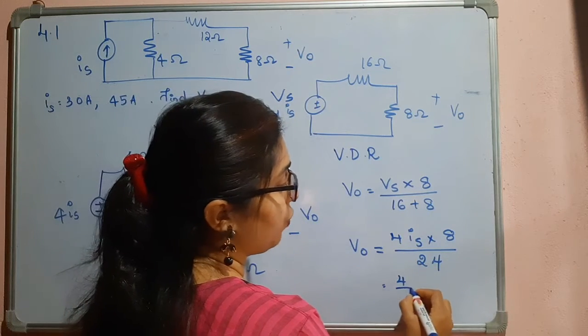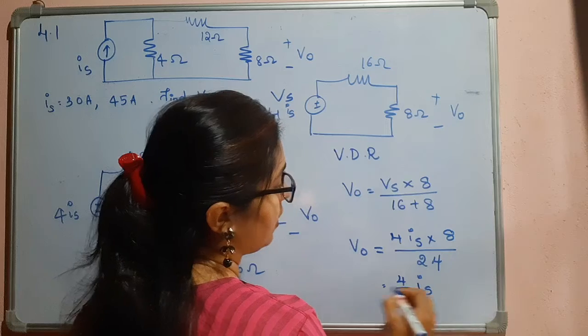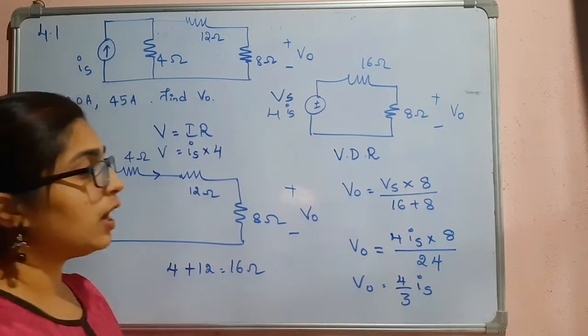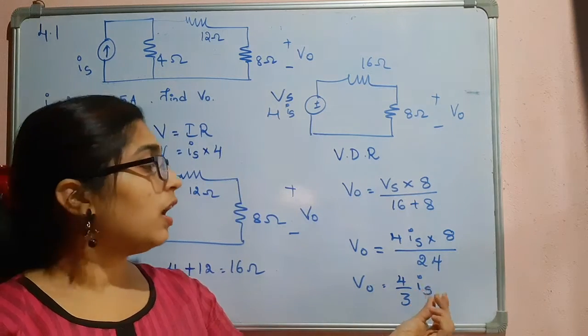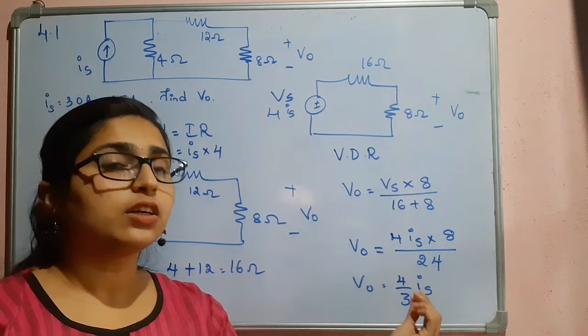So now we can write this as 4 by 3 IS, that is V0. So now we will substitute different values of IS which is given in the question.